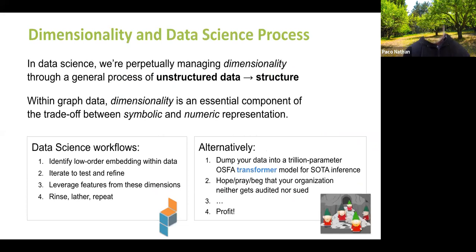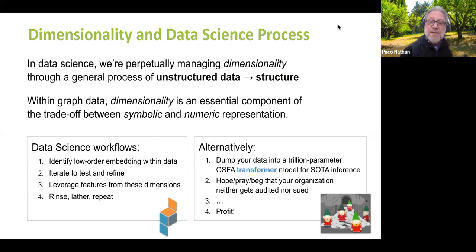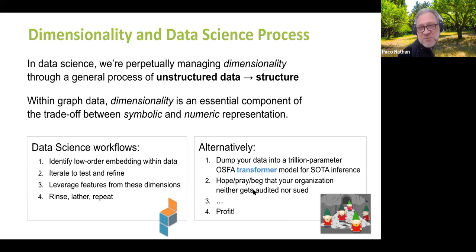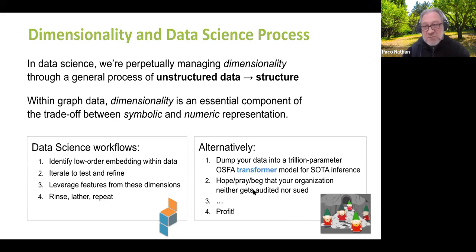This speaks to the idea of dimensionality. When working in data science, a lot of what we do is managing dimensionality. There's this general notion of going from unstructured data to having much more structured representation and leveraging the structure. Dimensionality is an essential part of that — it's always a trade-off between symbolic and numeric. What Uli Sattler was effectively saying is more of what I'm representing on the left — as opposed to what's on the right, which is: take all your data, dump it into one ginormous model, and then hope that you never have a lawsuit or have regulators come ask you hard questions. What's on the right is kind of where cloud vendors currently are — they have first-mover advantage, a lot of data sources, great AI teams, and own public clouds, but they seem fixated on that approach. I'm much more interested in what's on the left, and frankly within industry that's also very much a priority.